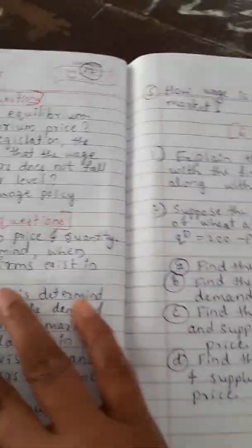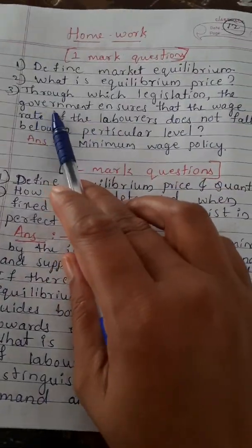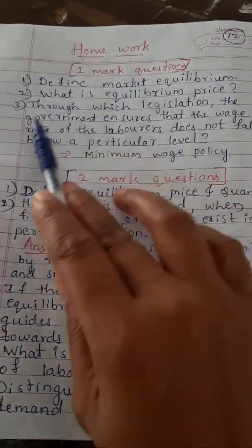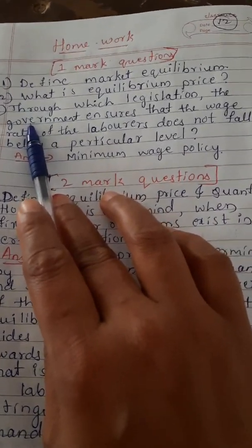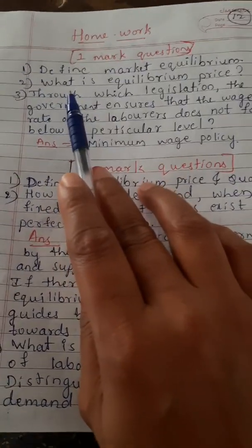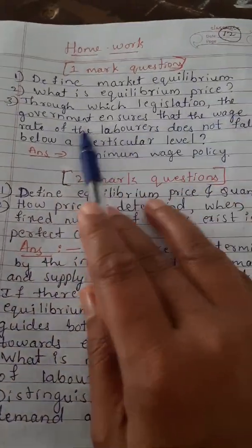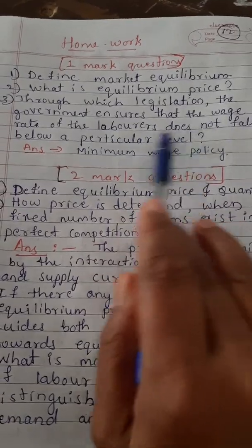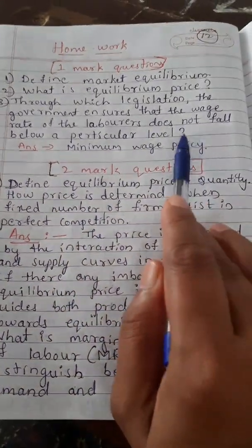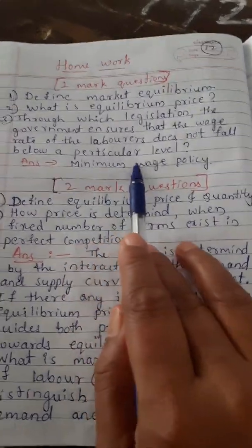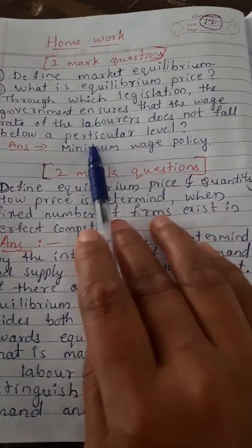This is the main important topic for two-marks questions. Through which legislation does the government ensure that the wage rate of labor does not fall below a particular level? The answer is the Minimum Wage Policy. This is mentioned in the textbook.